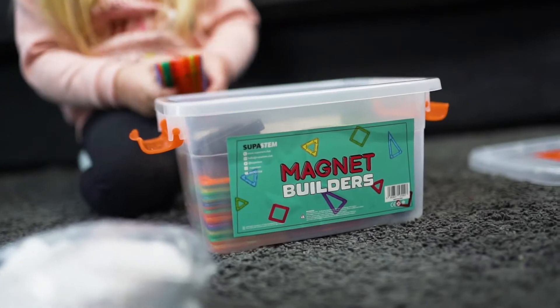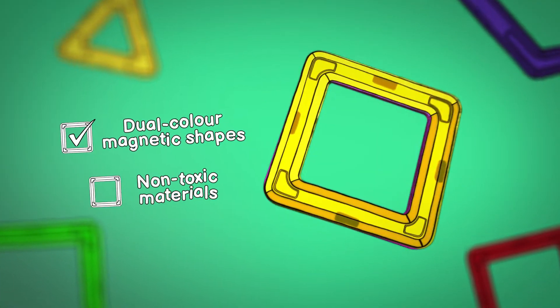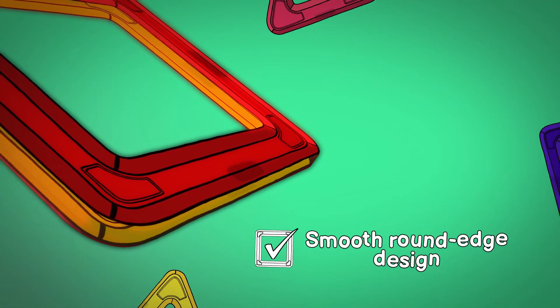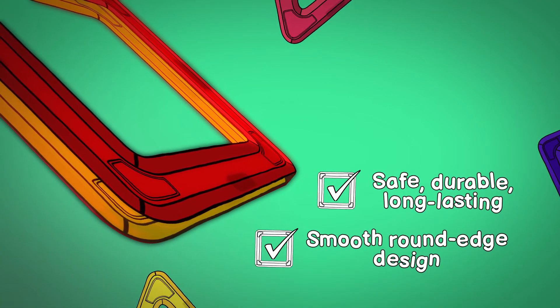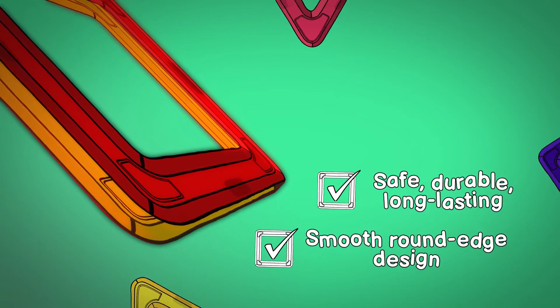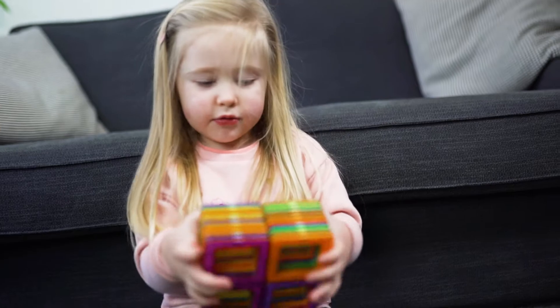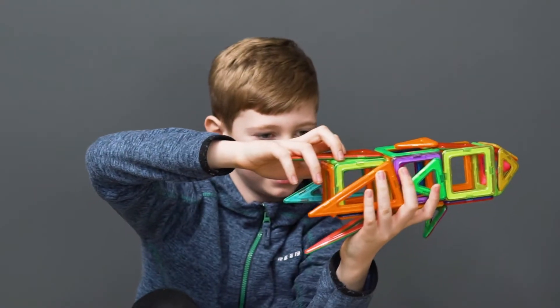Inside each SuperSTEM set you'll find a range of dual-colour magnetic shapes made from non-toxic materials with a smooth, round-edge design, meaning your magnet builders are safe, durable, and long-lasting. Our extra-strong magnets and multi-use shapes ensure there are hundreds of open-ended design possibilities for your little ones,